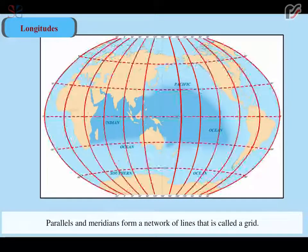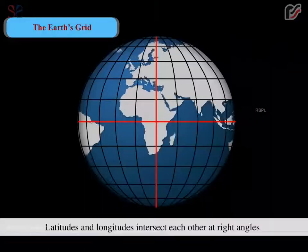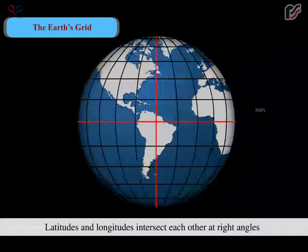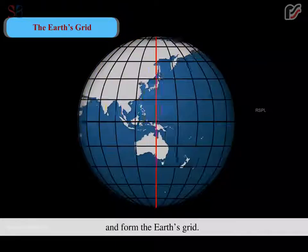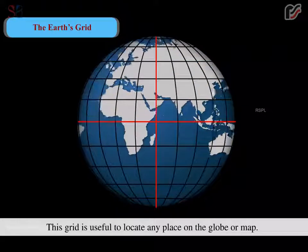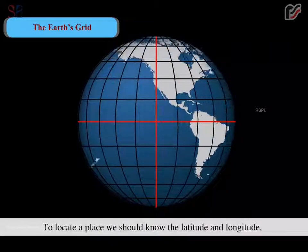Parallels and meridians form a network of lines that is called a grid. Latitudes and longitudes intersect each other at right angles and form the earth grid. This grid is useful to locate any place on the globe or map.